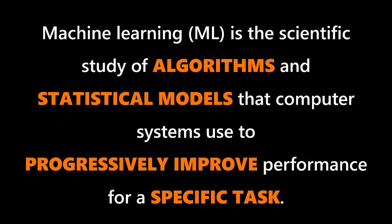So, what is machine learning? According to Wikipedia, machine learning is the scientific study of algorithms and statistical models that computer systems use to progressively improve performance for a specific task. Algorithms, statistical models, progressively improve — we're starting to get a grasp of what this is about. It's apparently something mathematical and we're doing something progressively.